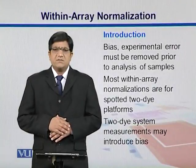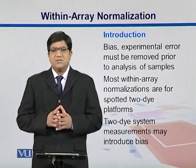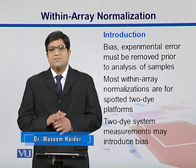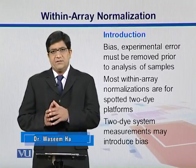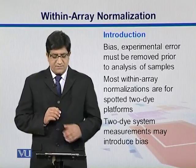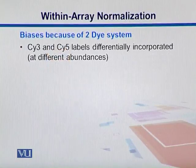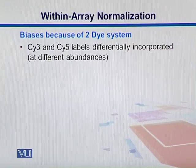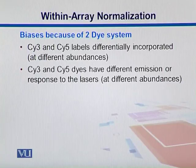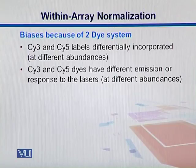Within array, normalization techniques are important for those experiments in which we are using differential dyes. Since we are using different colors, there is a tendency for different RNA to bind differently with either of these two dyes. So we need to do this normalization. Biases arise because CY3 and CY5 labels are differentially incorporated at different abundances, and CY3 and CY5 have different emission or response to lasers at different abundances. This can disrupt your signal intensity and ultimately your results.